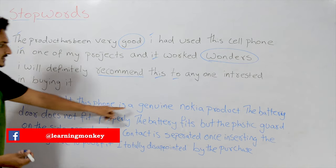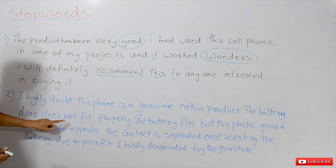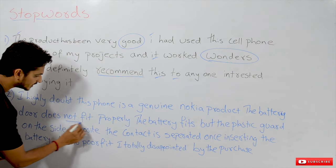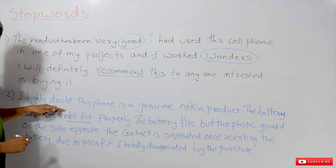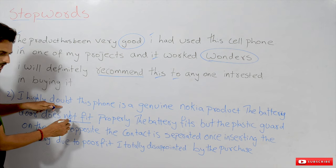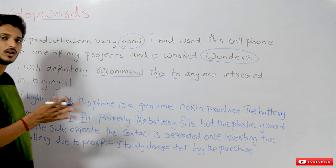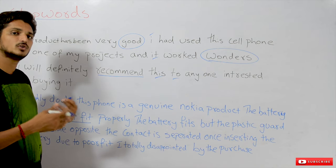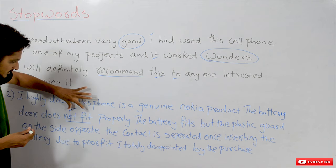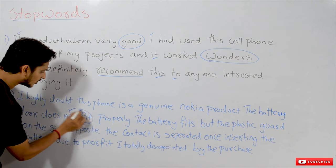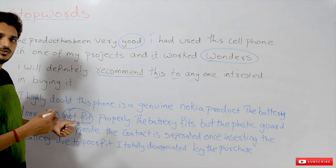This is a negative feedback: 'I highly doubt this phone is a genuine Nokia product. The battery door does not fit.' Now, 'not fit' — this is very, very important. If you remove 'not', it becomes positive. If you keep 'not', it remains a negative feedback. So 'not' is a word which is very, very useful in analyzing whether feedback is positive or negative. The combination 'not fit' is very helpful in understanding the sentiment.